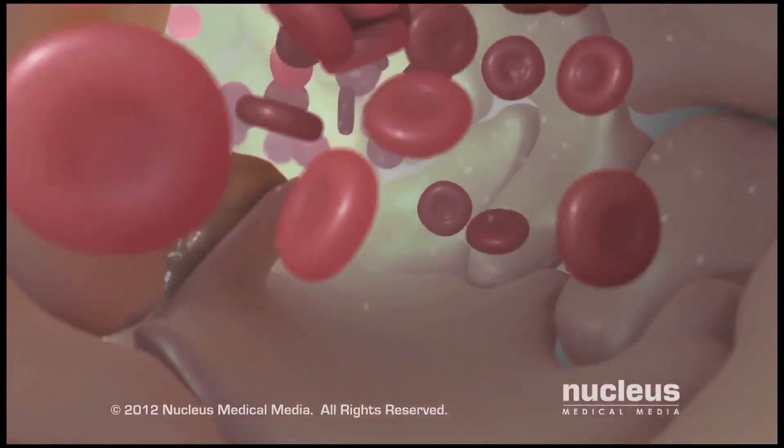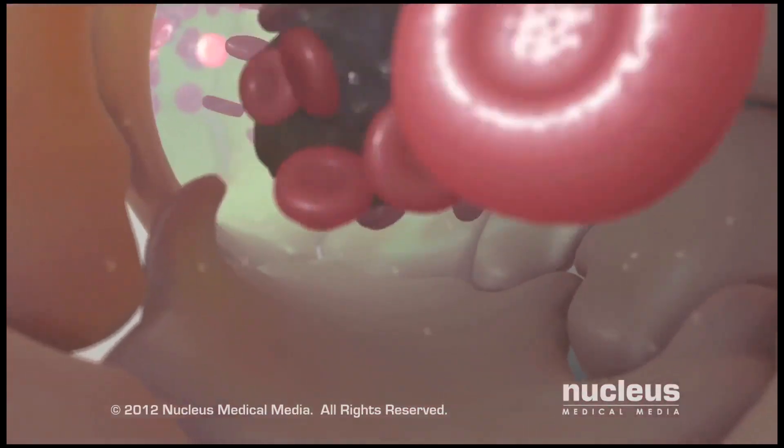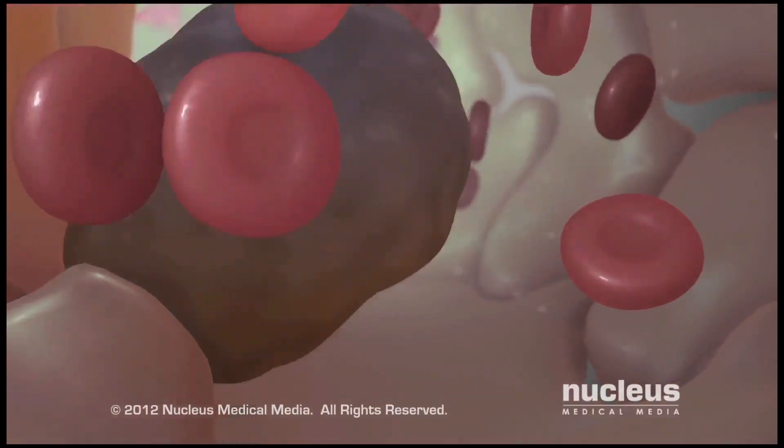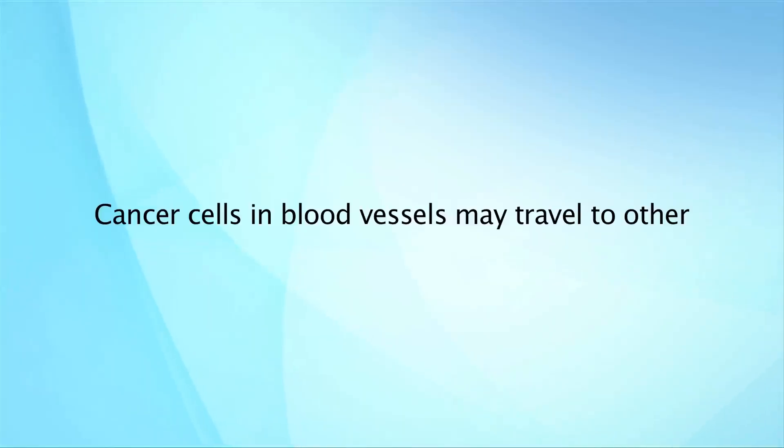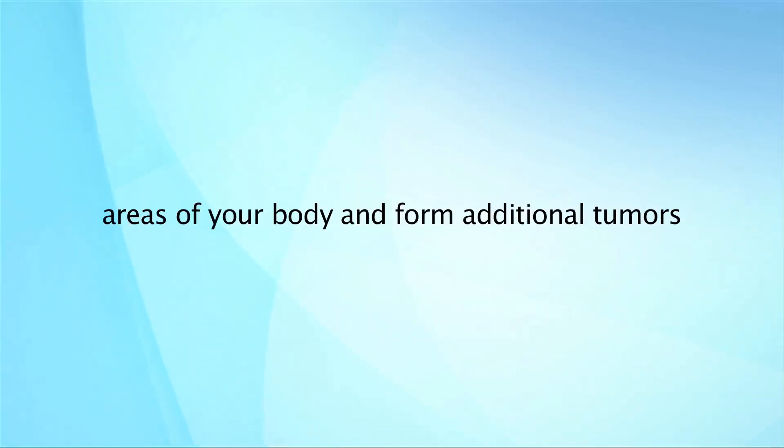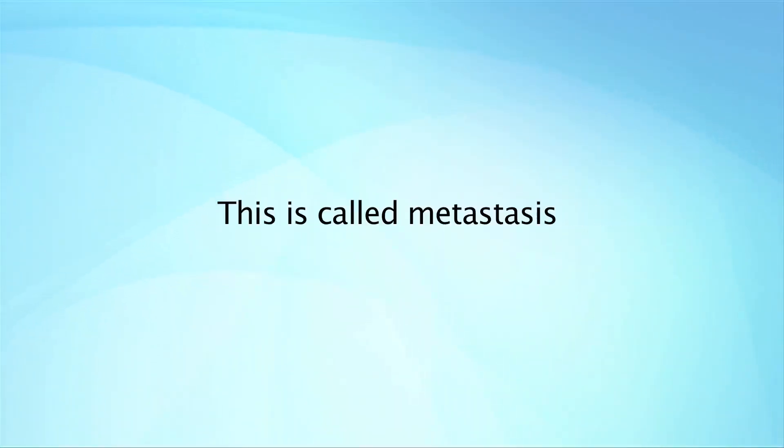Since cancer cells do not stick together as well as normal cells, they may break away and enter a nearby blood vessel. Cancer cells in blood vessels may travel to other areas of your body and form additional tumors. This is called metastasis.